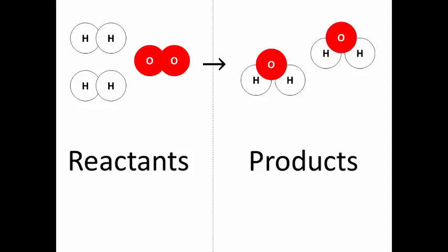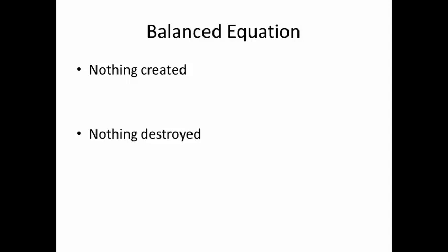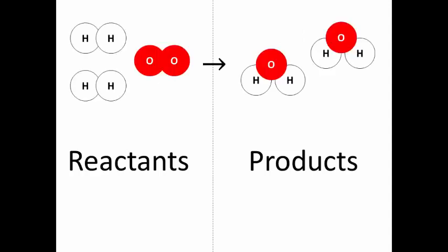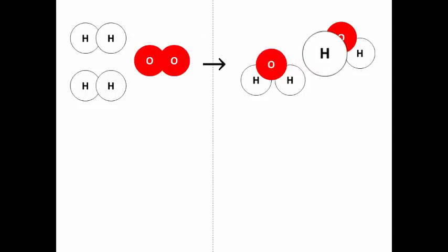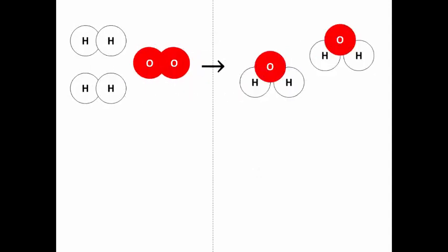For the reaction to be balanced, you can't have any atoms disappearing or just coming from nowhere — that would be impossible. All the atoms you had in the beginning amongst the reactants must still be there at the end of the reaction amongst the products. We can see that hydrogen atom ended up there, that hydrogen atom ended up there, that hydrogen atom over there, and that one over there. Every hydrogen atom that was there at the beginning in the reactants is accounted for at the end in the products.